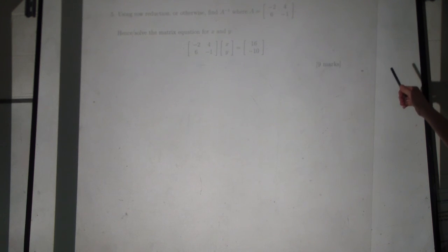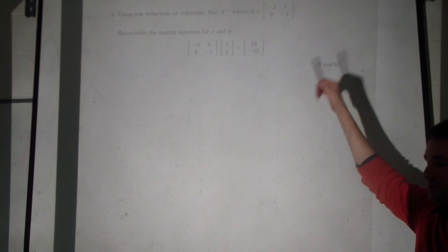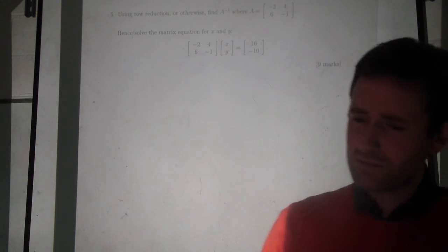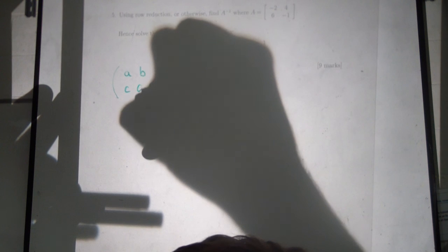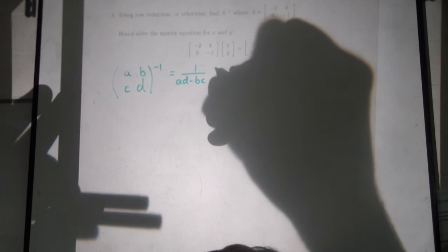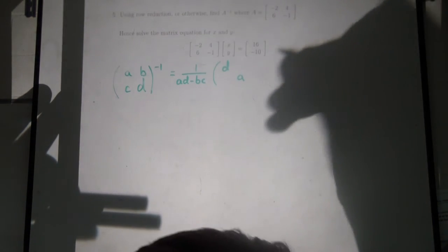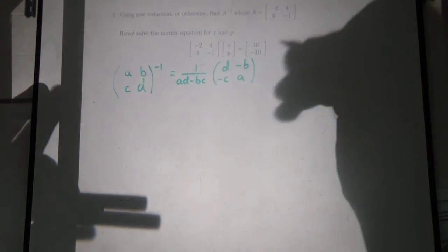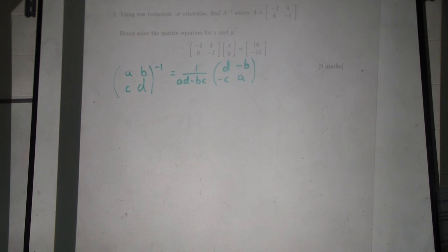Using row reduction or otherwise, find the inverse of this matrix. You've got two minutes — you can write the matrix with the identity and do row operations. But there's a much easier way: the formula for a 2×2 inverse. The formula, which will be on the front of the test: one over (ad minus bc), then swap the diagonal entries and change the signs on the off-diagonal entries.